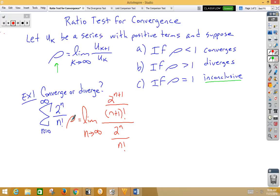So now, since we have a fraction divided by a fraction, let's multiply by the reciprocal. And let's use some of the skills that we've learned to break apart this next term. So 2 to the n plus 1 can be written as 2 to the n times 2 to the first power. n plus 1 factorial can be written as n plus 1 times n factorial.